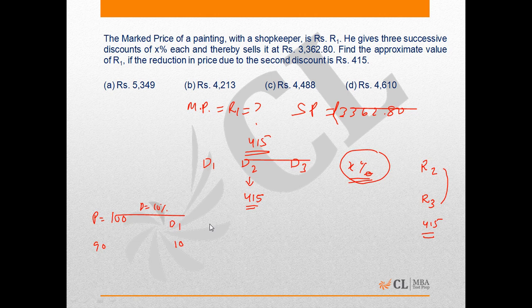When the second discount of the same 10 percent is given, then the reduction in price will be Rs 9, and the price after this will be 81. And when again a discount of 10 percent is offered, the reduction in price, that is the third discount, will be 8.1.